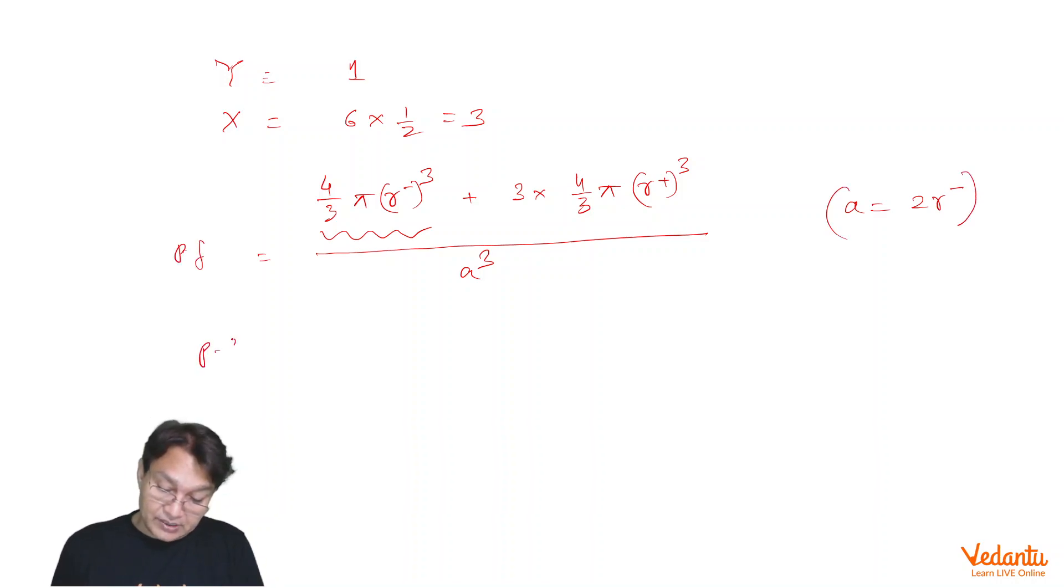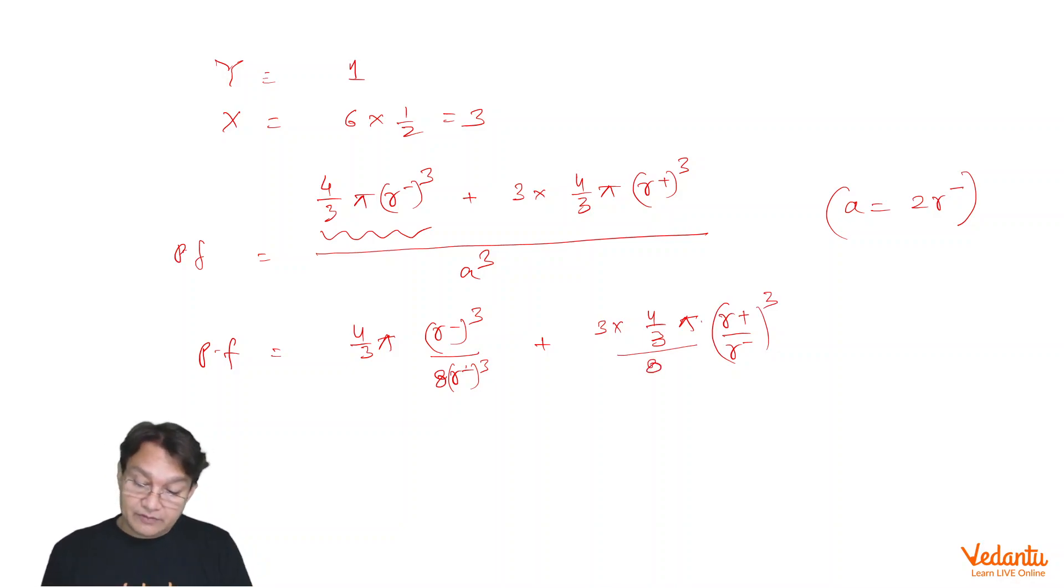So substituting this result in this expression, packing fraction should be 4 by 3 pi R- cubed upon 8 R- cubed and plus 3 into 4 by 3 into pi R+ upon R- whole cubed divided by 8 because in the denominator we have 8 R- cubed.